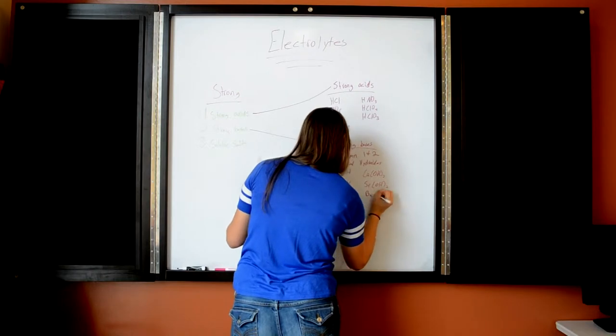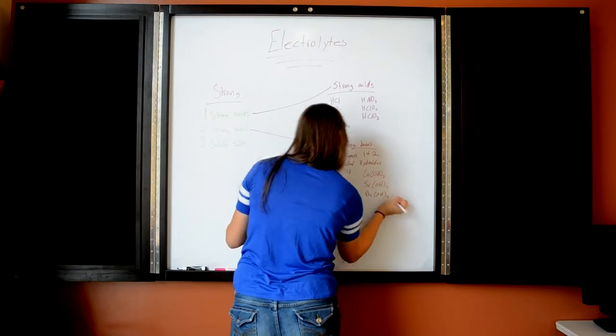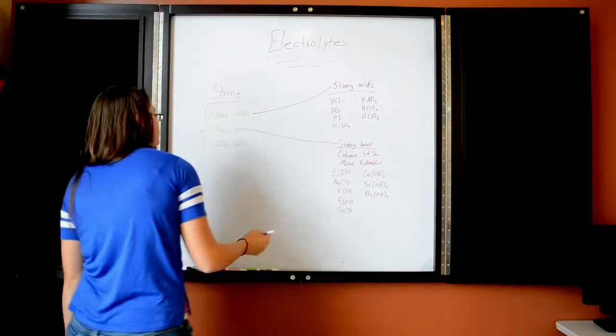So once you know the strong acids and strong bases, you can worry about what makes a salt soluble. Here are the solubility rules. Don't panic — they are not as bad as they seem, I promise. You just have to break them down in a way you can understand. Let's read through them so we know what they are.